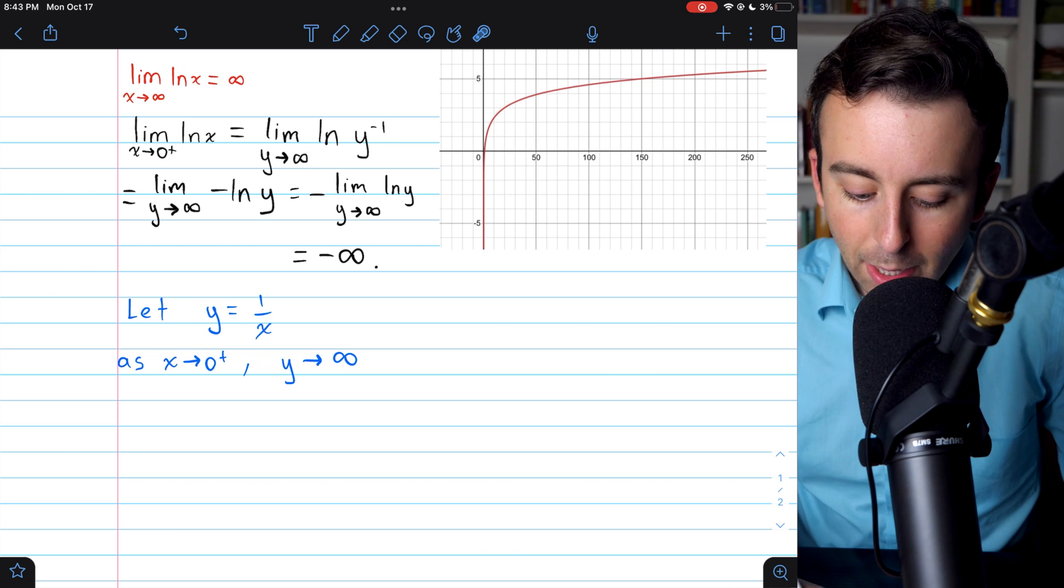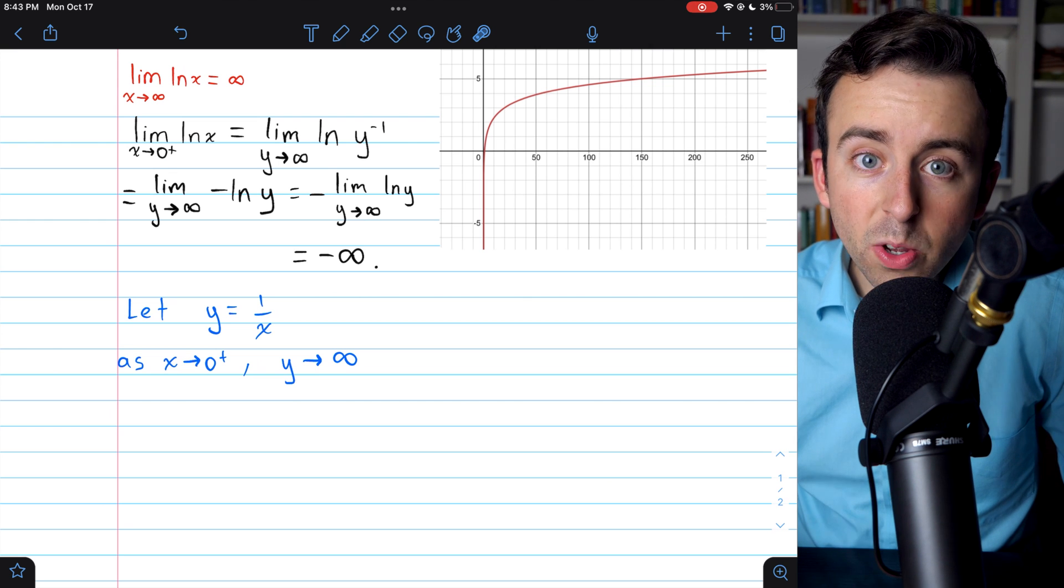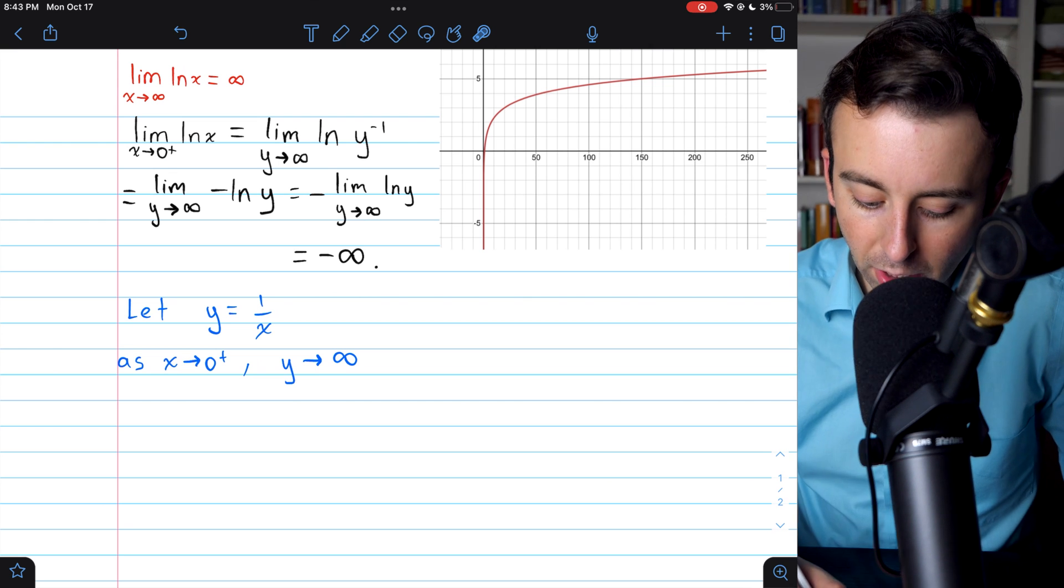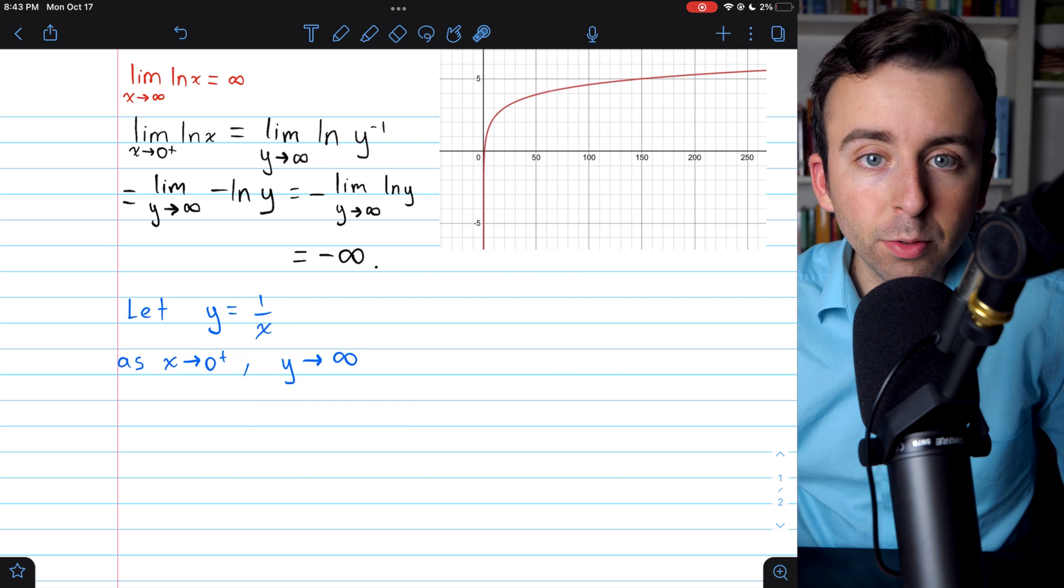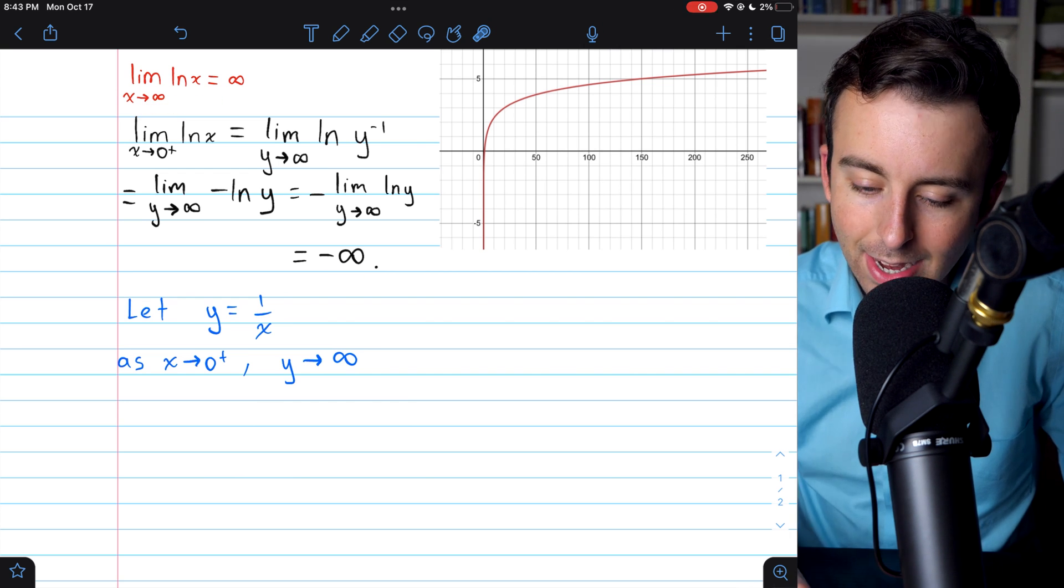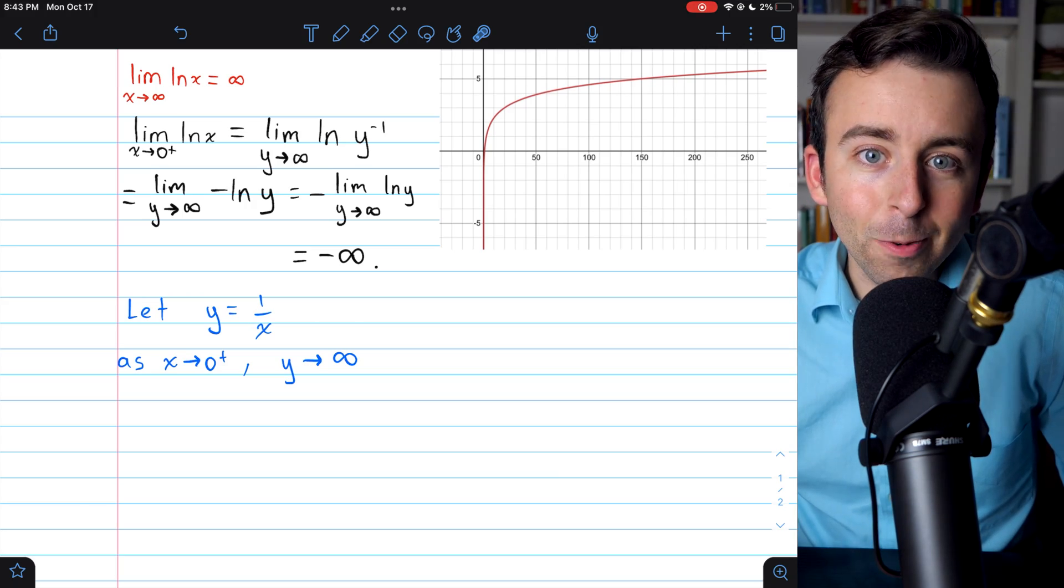So that's it. To evaluate the limit of natural log of x with x approaching 0 from the right, we use a change of variable using y equals 1 over x and then we just apply a previous result. The limit turns out to be negative infinity. Let me know in the comments if you have any questions or video requests.